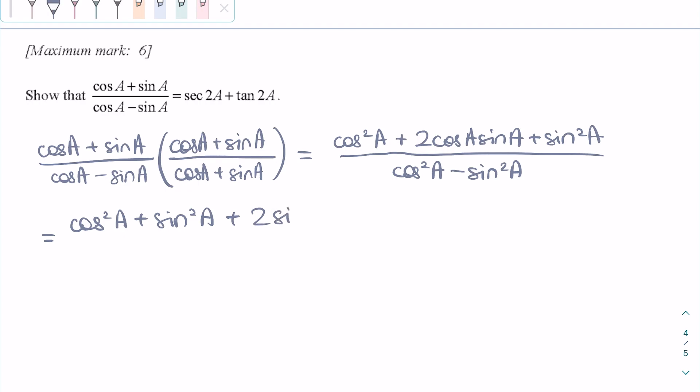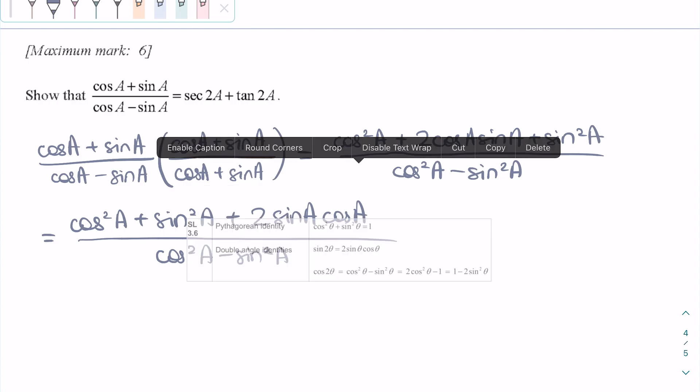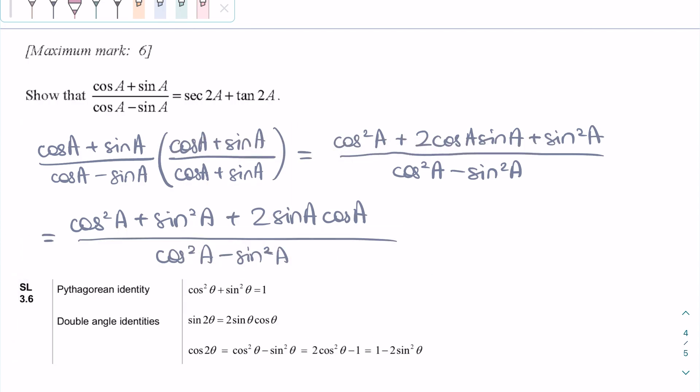When we rearrange the numerator, we actually find that the fraction resembles identities found in the formula booklet. For example, cos squared a plus sin squared a is equal to 1. The denominator is equal to cos 2a and the numerator is equal to sin 2a.